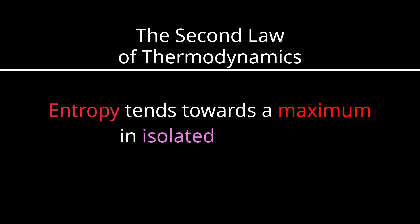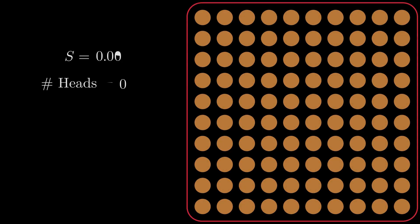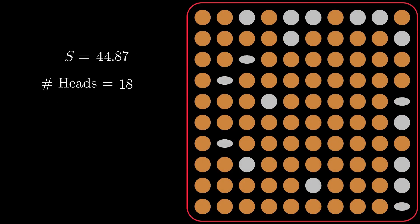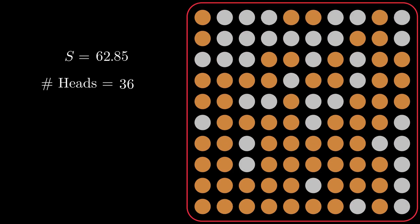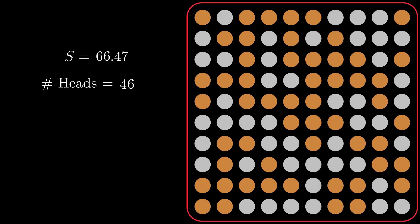So, why does entropy tend towards a maximum in an isolated system? States with higher entropy have more ways to exist, and therefore a higher probability. In other words, the second law of thermodynamics says that isolated systems tend towards their most likely states.